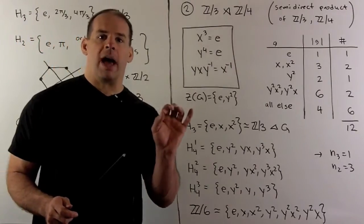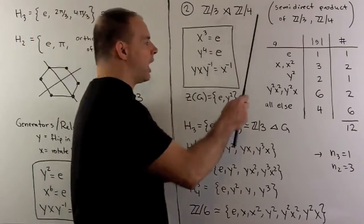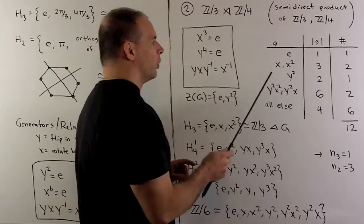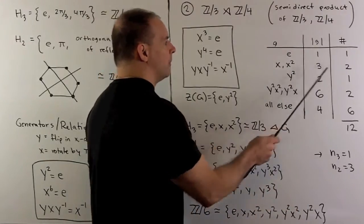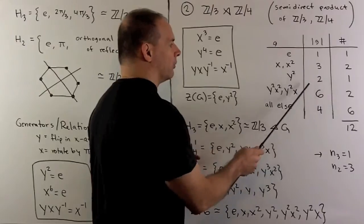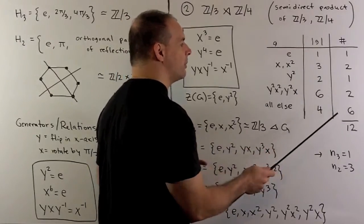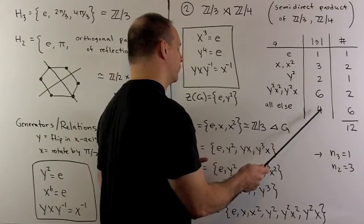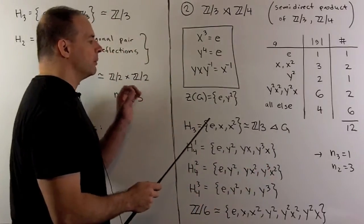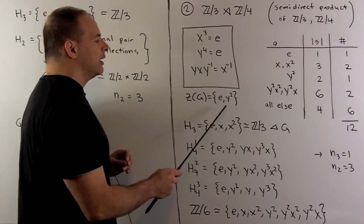Now, it's a little bit of a workout, but you should verify the following table. We're going to have two elements of order 3, one element of order 2, two elements of order 6, and six elements of order 4.